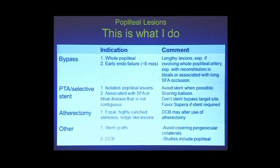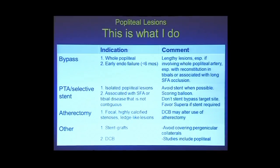If I have a patient where I've done what I thought was a really satisfactory endovascular reconstruction and the patient failed early, and it's popliteal, I might think about bypass in that setting. That's not most patients. Most patients have lesions that are more isolated, or if not totally isolated, associated with some other SFA or tibial disease that's not necessarily contiguous. For those patients, I typically use PTA and selective stenting. I don't have all the data to back up my opinions, so I'll show you what data we have.